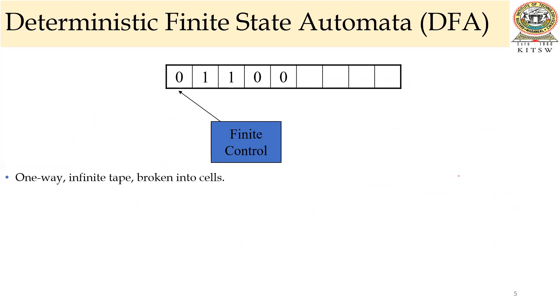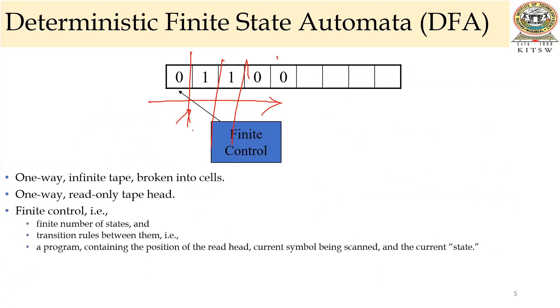Deterministic finite automata, we can say it's a one-way infinite tape broken into different cells. These are the different cells which is broken, and one way it starts from left to right or right to left. And it is having a read-only tape head. This is the tape head. And the finite control, finite number of states, you are going to move from one state to another state based on the transition function.